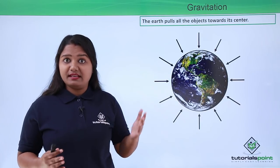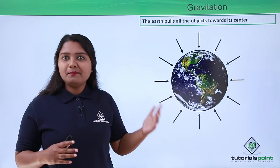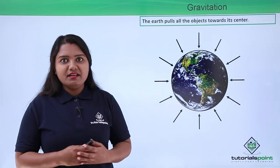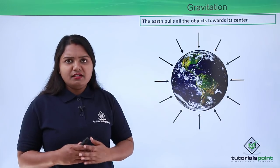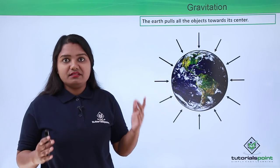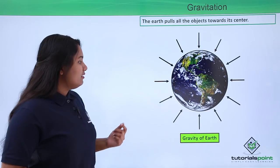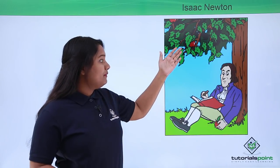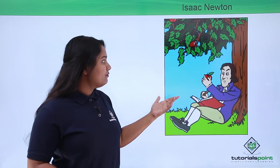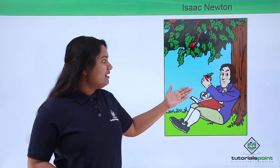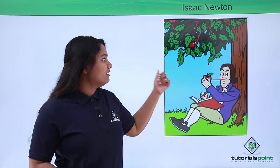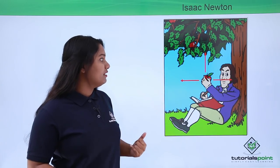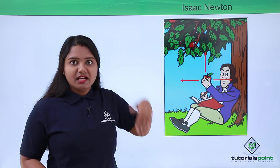Now how did we come to know about this gravitational force? There must be some person who discovered it. To answer this, we'll look at a story that most of you might already be familiar with. This story is about a man who was sitting under a tree when an apple suddenly fell on him, and he started wondering why the apple didn't move left, right, or upward — but moved straight downward.